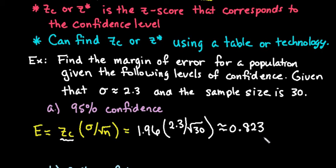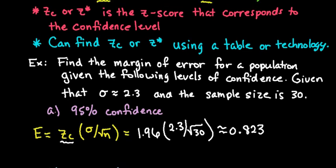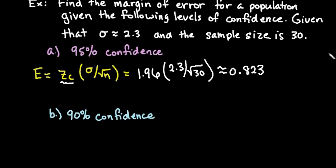If we were actually finding the confidence interval we would just take our point estimate and subtract this value to get the lower limit and add this value to get the upper limit. Let's look at another example and compare the two values.